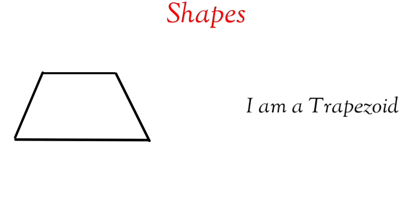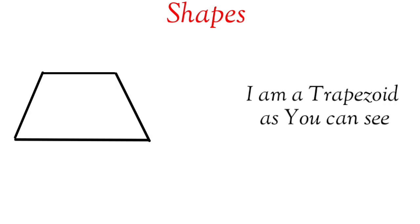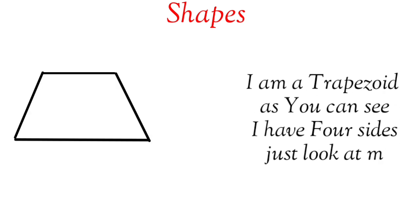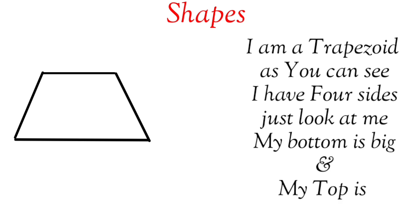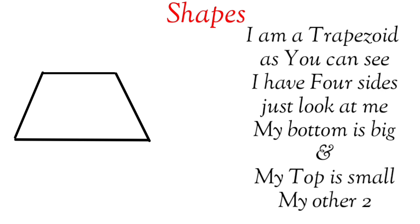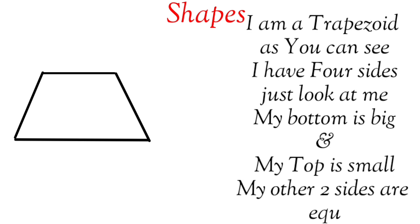I am a trapezoid. As you can see, I have four sides. Just look at me. My bottom is big and my top is small. My other two sides are equally tall.